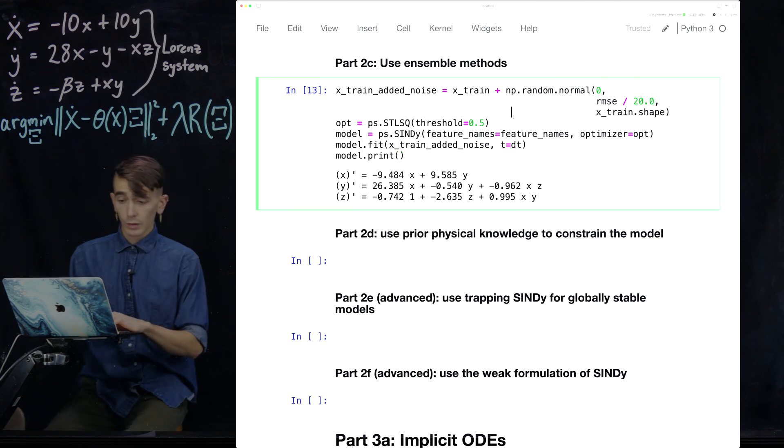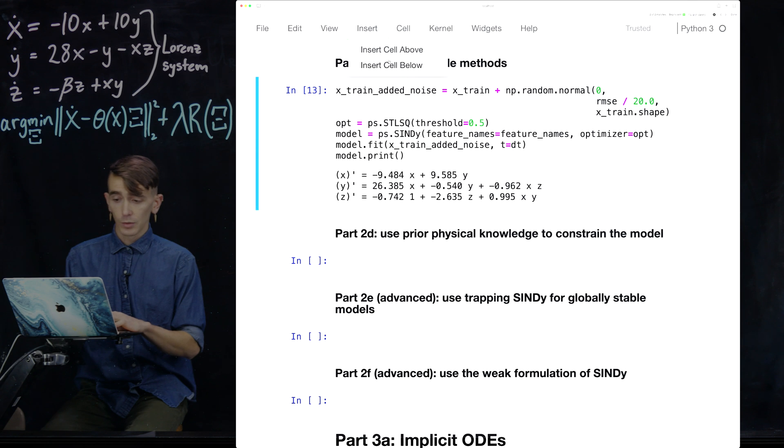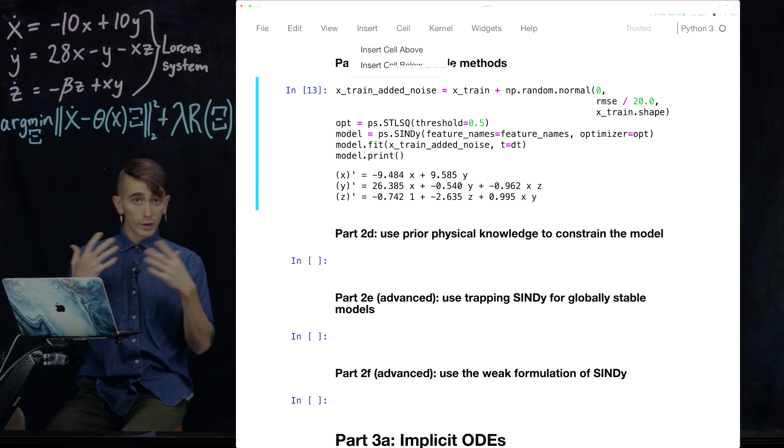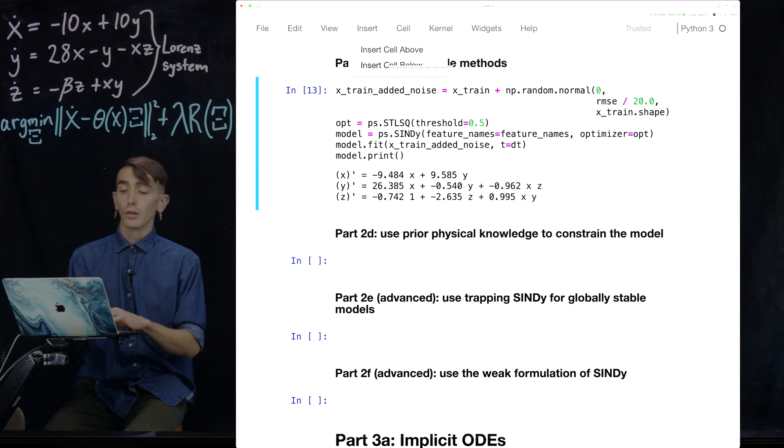What we can do, though, is just try the exact same thing, but generate like 20 or 50 models, and then average or take the median of those models to actually get additional robustness to that data.